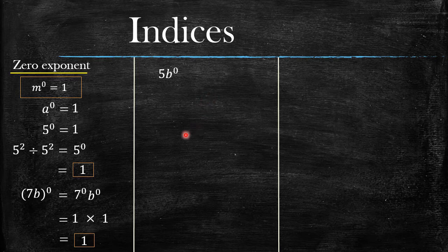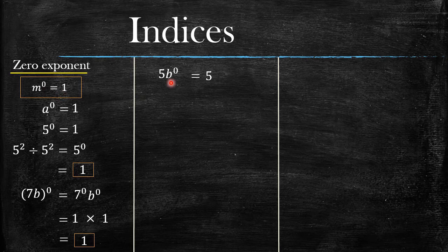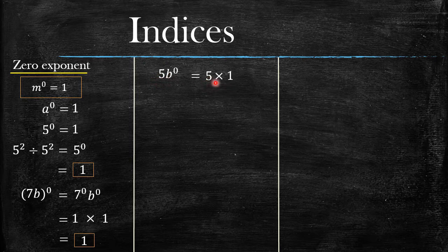What if you have the number five and b, but only the b is raised to the power zero and the five is not raised to anything? Since the five is not raised to anything, we just write five in the answer. Now b is raised to the power zero, and the zero exponent law says anything raised to the power zero is one. So b raised to the power zero is one. Five b is the same as five multiplied by b, so we write five multiplied by one, which equals five — our final answer.